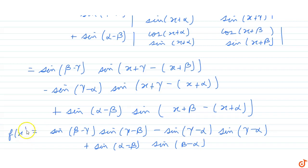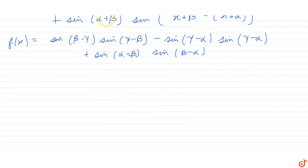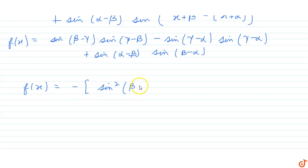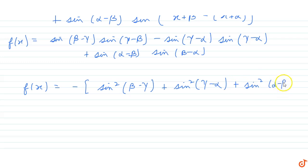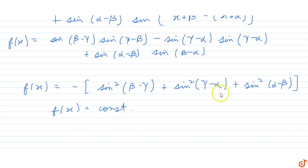This is our value of f of x. Simplifying it further, we get f of x equals minus of sin²(beta minus gamma) plus sin²(gamma minus alpha) plus sin²(alpha minus beta). This is the value of f of x. What we observe is that f of x is a constant — it does not depend on the variable x — and we are given that f of 2 equals 6.